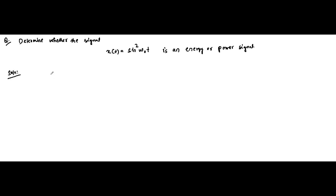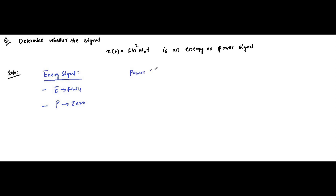The two basic conditions required to prove whether it is an energy signal or power signal: first, for an energy signal, the energy should be finite and power should be zero. For a power signal, the power should be finite and energy should be infinite. These are the two conditions.